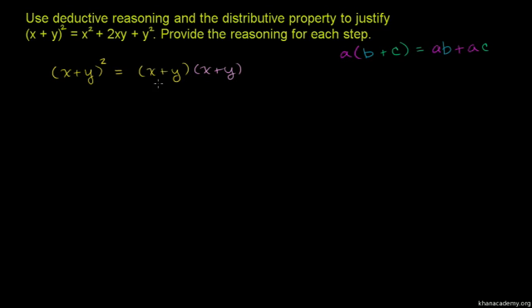We have (x + y) times (x + y). Using the distributive property, we take (x + y) and multiply it by x, then multiply (x + y) by y. This gives us two terms that we'll expand further.